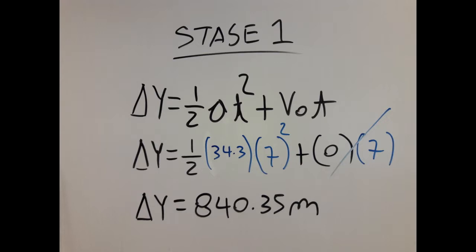In this case, I plug in 34.3 for acceleration and 7 for the time. I can use the kinematic equations because acceleration is constant. Now, we determine that the delta y for the first stage is 840.35 meters.